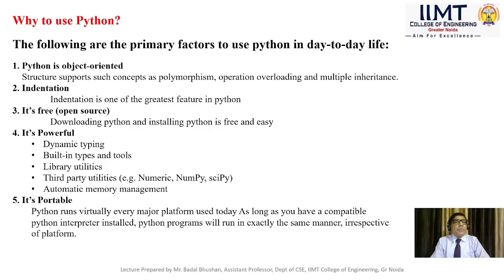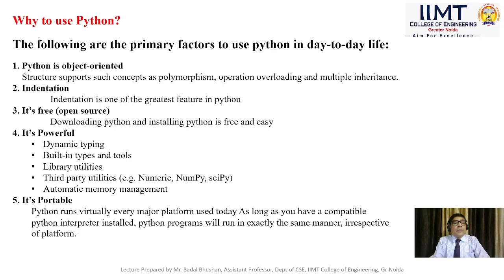Now, why use Python? The following are the primary factors for using Python in day-to-day life. First, Python is object-oriented — it supports concepts such as polymorphism, operator overloading, and multiple inheritance, making it 100% object-oriented like Java and C++. Second, it is free and open source — no need to pay for downloading any Python software; you can download it freely from python.org.